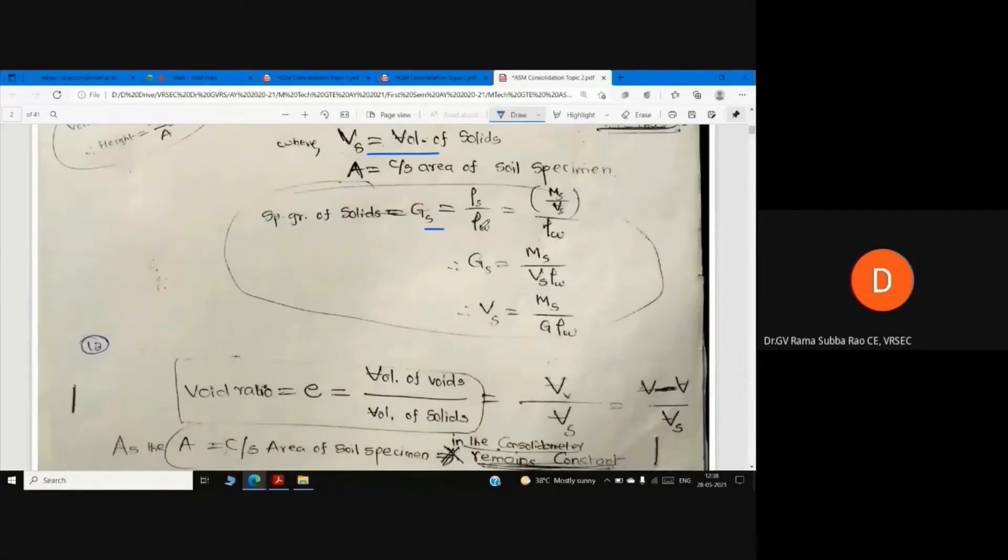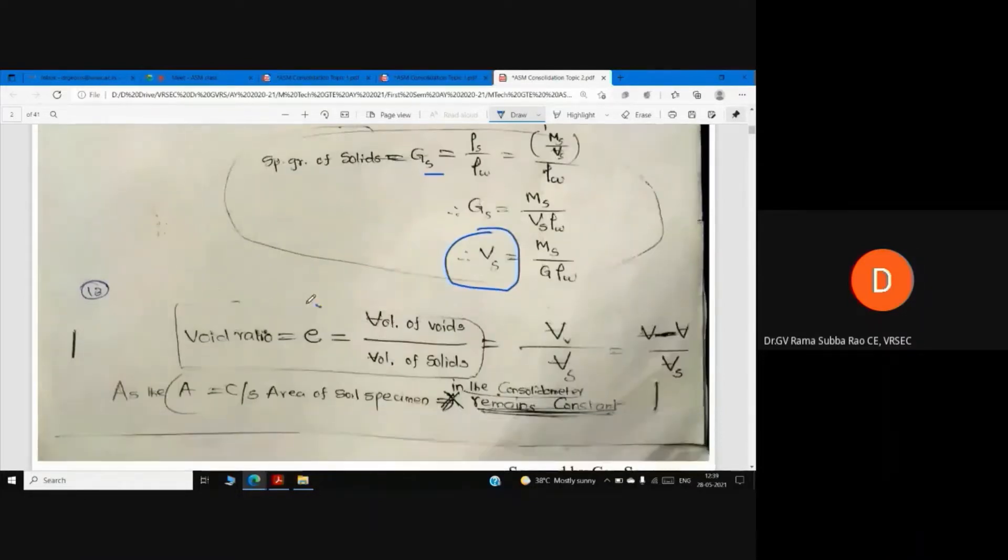Specific gravity of solids equals density of solids by density of water. Now how to calculate density of solids: mass of solids by volume of solids. Gs is equal to Ms by Vs. What is Vs? Volume of solids. The definition of void ratio: e is equal to Vv by Vs.